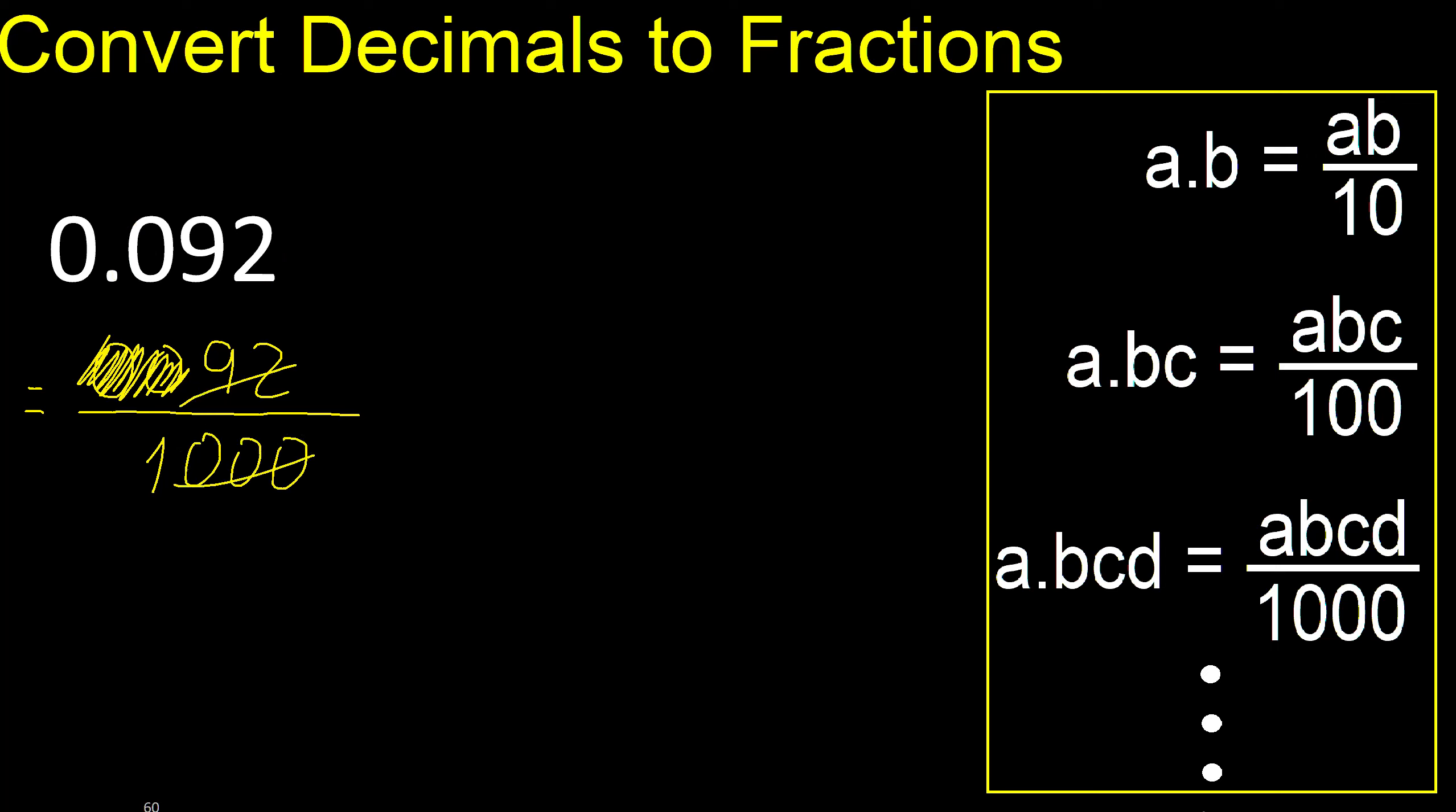Can be simplified because it can be divided by the same number. Divided by 2. Divided by 2, 46. Divided by 2, 500. Can be divided by 2 again.